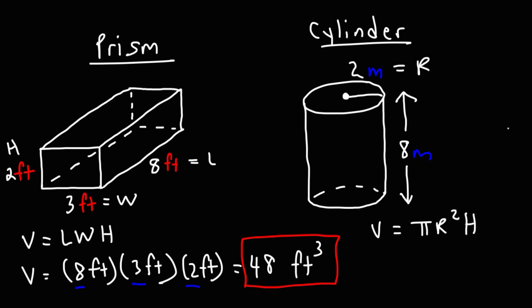R is the radius of the cylinder, which is 2 meters, and the height is 8 meters. So if we plug the information into this formula, we're going to have this.